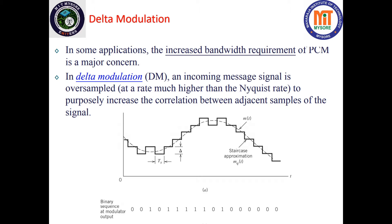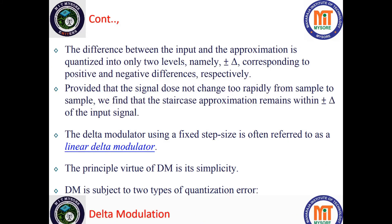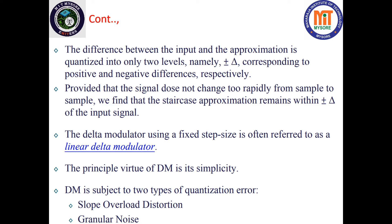We can overcome this bandwidth requirement issue of pulse code modulation by using delta modulation. Here an incoming message signal is oversampled — that is, a much higher rate than the Nyquist rate is used to sample the signal. This is done purposefully to increase the correlation between adjacent samples. Then the signal is quantized such that the difference between the input and the approximation has only two levels: plus delta and minus delta. If the signal is increasing, you quantize the next value as plus delta; if decreasing, as minus delta.